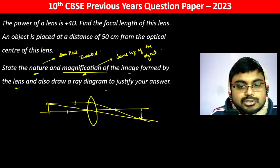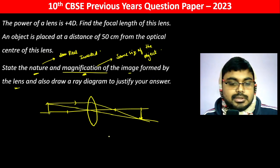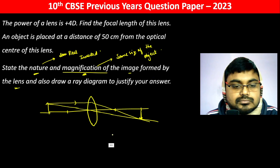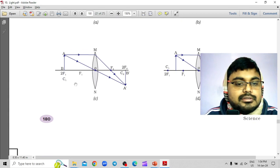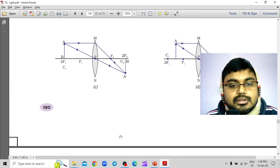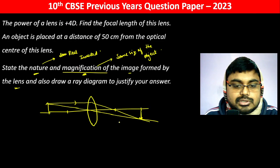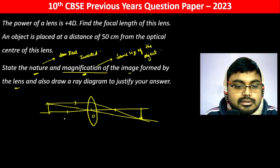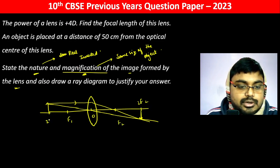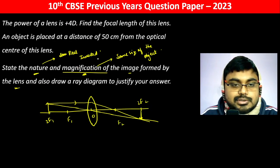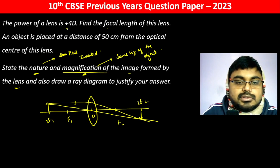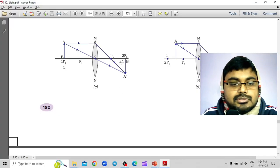See the formula for the lens and also draw a diagram — a diagram as mentioned. This is the optical center, F1, F2, and this is a converging lens because the focus is positive. The focal length is plus 25 centimeter.